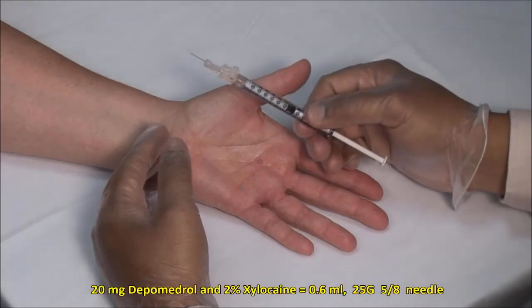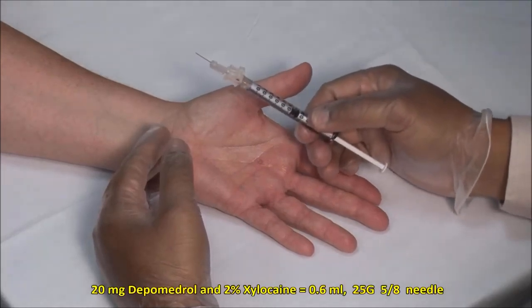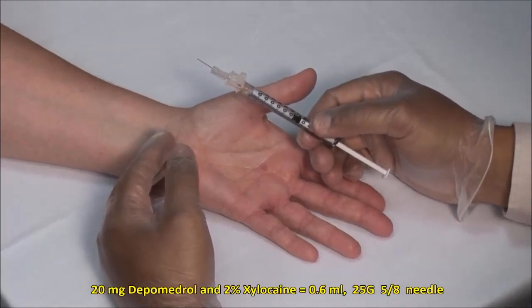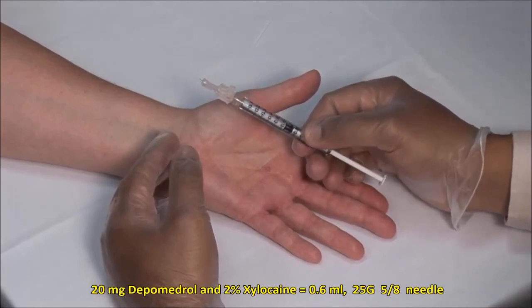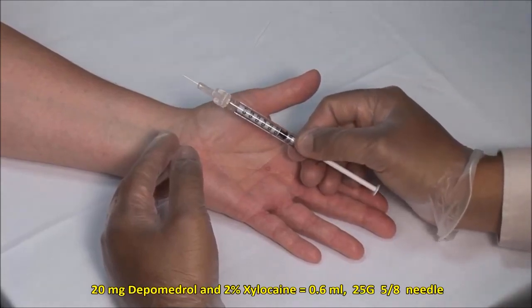Here I have a 1ml syringe with a 25 gauge 5/8 inch needle and a mixture of 20 milligrams of depo-medrol and 2% xylocaine made up to a volume of 0.6ml.